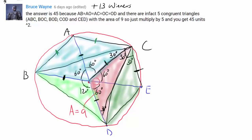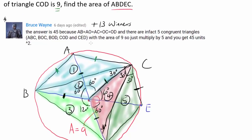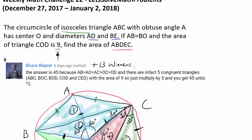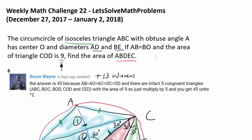In the end, we have 5 congruent triangles making up our pentagon. Since the area of one triangle is 9, our final answer for the area of pentagon ABDEC is simply 9 times 5, or 45.